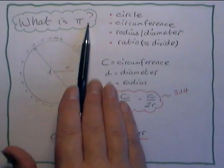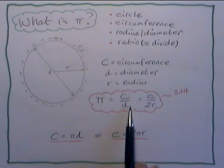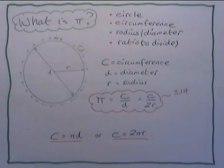So just to really clarify the answer to the question, what is pi? It's the ratio, pi is the ratio of the circumference of a circle to its diameter.